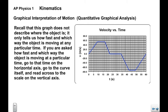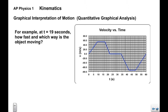Recall that this graph does not describe where the object is — it only tells you how fast and which way the object is moving at any particular time. If you're asked about a particular time, go to that time along the axis, up to the curve, and read across to the velocity scale. At t equals 19 seconds, we go up to the graph and over, and we see the object is moving 30 meters per second. It's above the time axis, so it's moving to the right — the plus is implied.